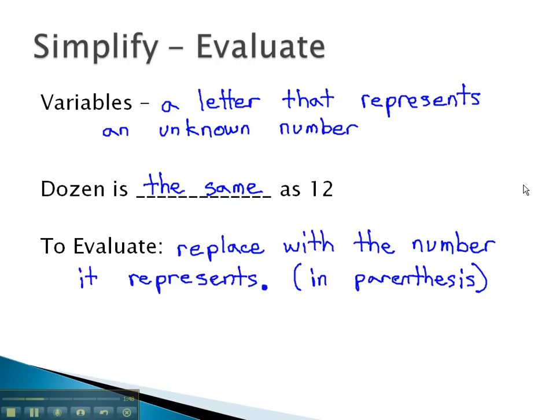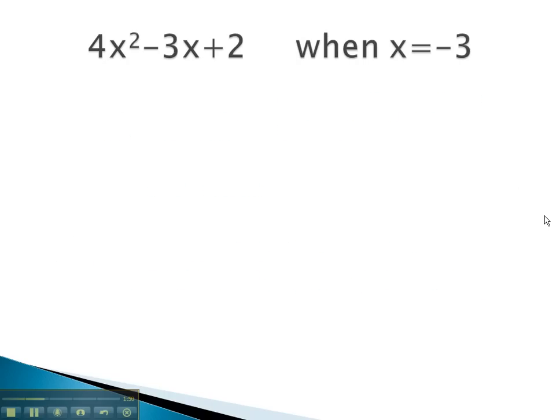Let's take a look at an example where we can replace the variable with the number that it represents. Notice our x² and our x, both those x's we know equal or represent negative 3. So let's rewrite the expression, replacing the x with negative 3. Notice as I replace the x with negative 3, that substituted replaced value is put in parentheses.